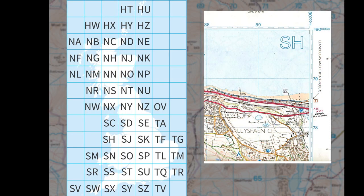That's not all though — with the grid reference we need to add the suffix at the start. For Snowdonia we are SH, and that can be seen in the corner of my map just here. Each little square that the country is broken down into has its own unique couple of letters, so we need to put those at the start of our grid reference. Here in Snowdonia we can see we're SH.